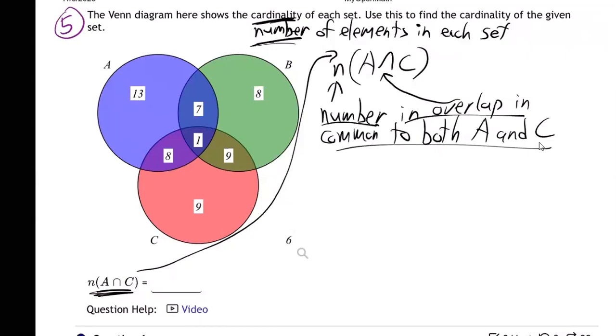A and C, U turn over overlap. All right, what do you all think? What is the number of elements in the overlap in common to both A and C? Eight and one, yeah exactly. It's gonna be eight and one - nine. Our answer is nine. Everybody's seeing that? Because